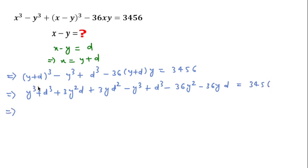Now we will cancel this y³ and y³, and also I will take common y² from these two terms. Actually I will take 3y² common, so I will take 3y² common, then here d left and here minus 12.